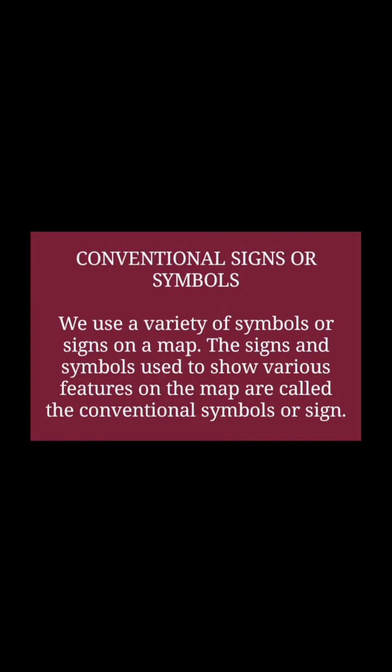Through conventional symbols and signs we can show boundaries, roads, railways, water systems, vegetation, monuments, settlements, and many more things on a map. Symbols are made according to the scale and can be drawn in different colors. A key on a map explains the meaning of these symbols. We can easily remember these symbols with a little practice.